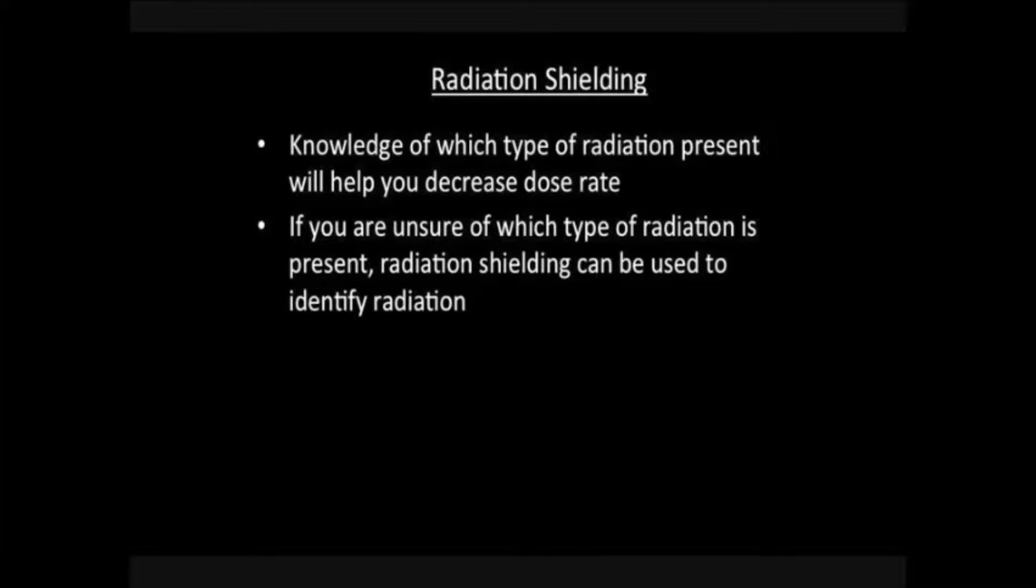Knowing what type of radiation you work with will help you decrease dose rates in your area more effectively. If you do not know if the source of radiation contamination or exposure was alpha, beta, gamma, or neutron, you could use shielding to identify the type of radiation.